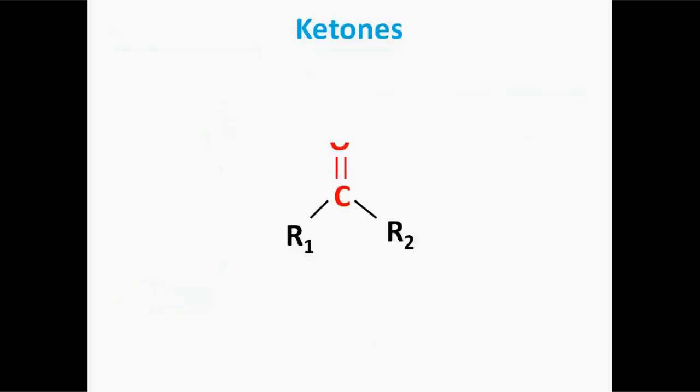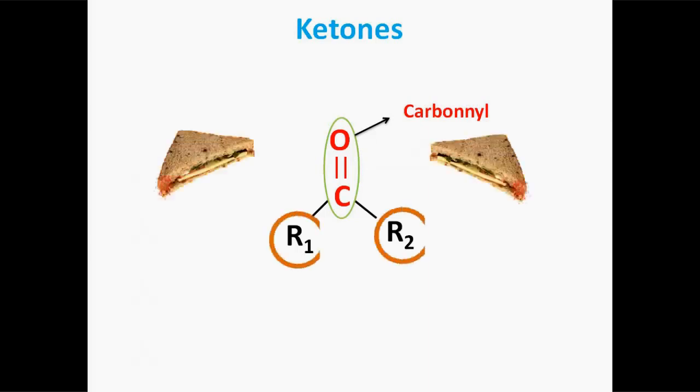What about ketones? In chemistry, a ketone or alkanone is an organic compound with this structure where R1 and R2 can be a variety of carbon containing substituents. So, it's like the carbon with a double bond to oxygen is sandwiched between two radical groups.